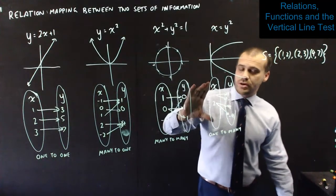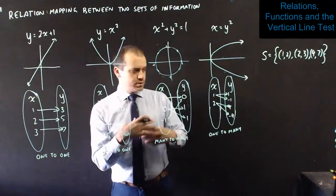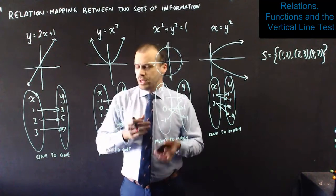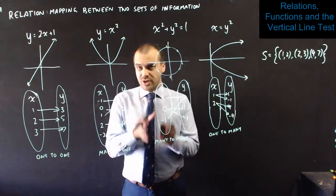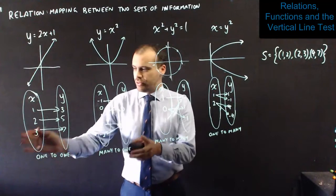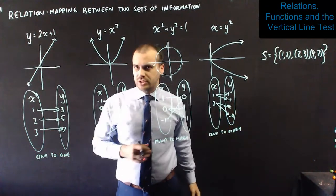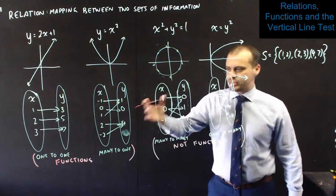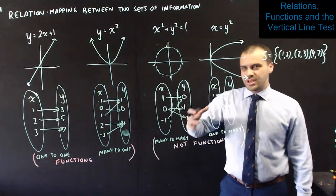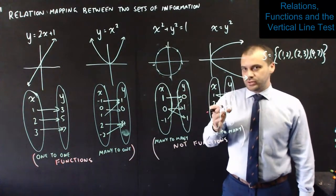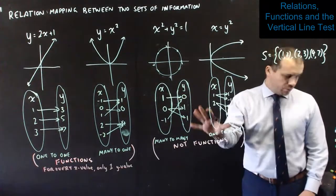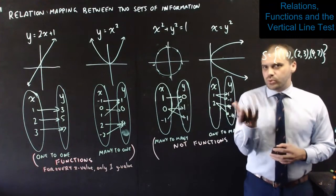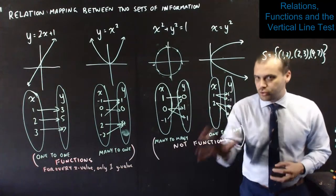So, we actually have four different ways of looking at relations: equations, graphs, arrow maps, or this ordered set. Now that we know what relations are and all of the different ways that we can show them, we need to talk about a special kind of relation called a function. Now, it's straightforward. These are functions. These are not functions. Those two are functions because they are either one-to-one correspondences or many-to-one correspondences. For every x value, there is only one y value. Whereas, for these ones, for at least one x value, there is more than one y value.